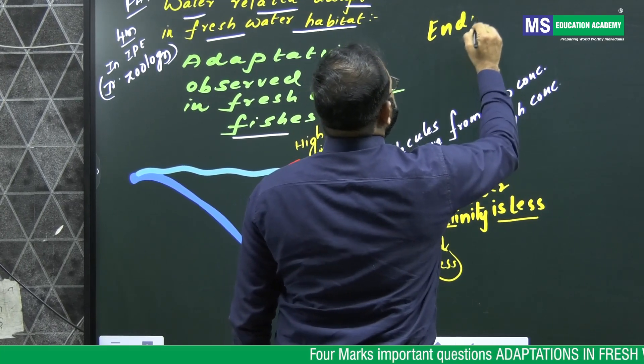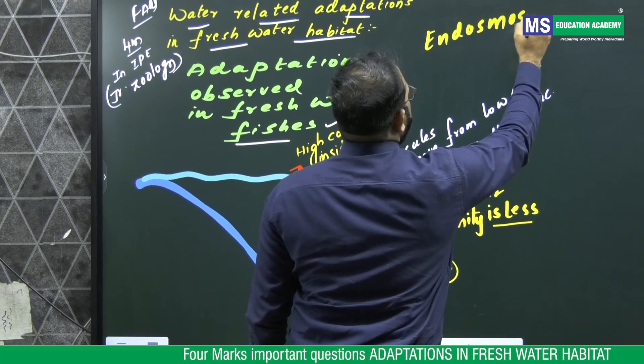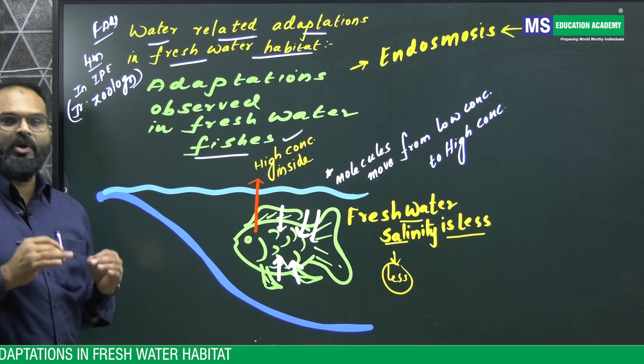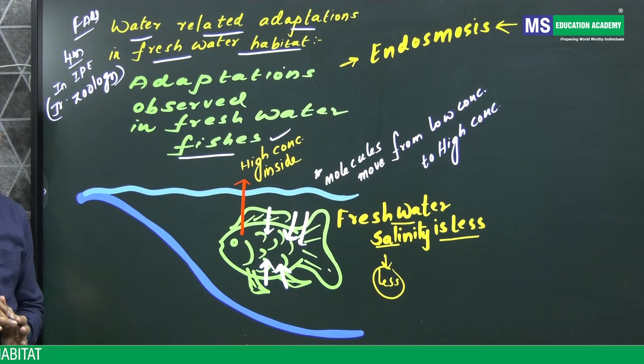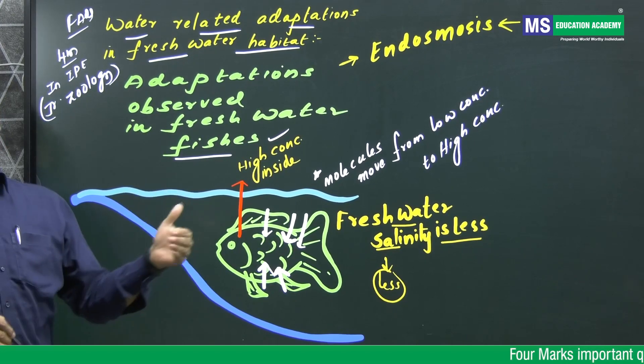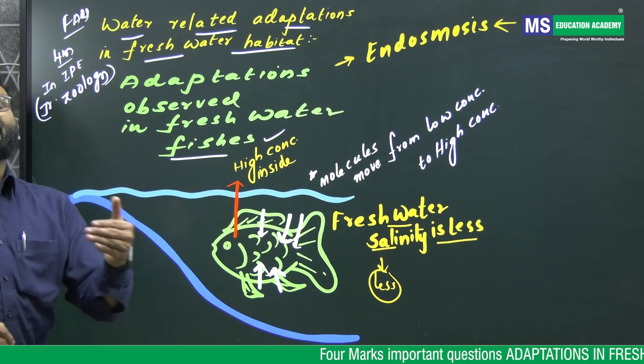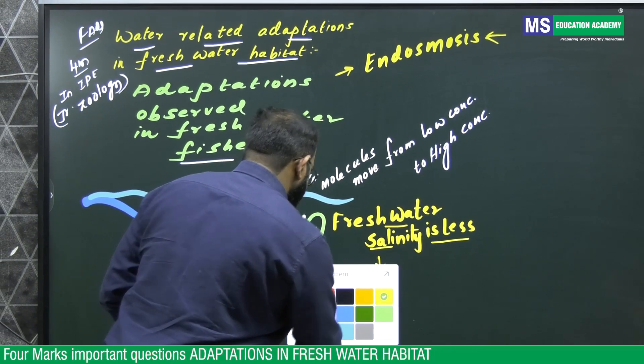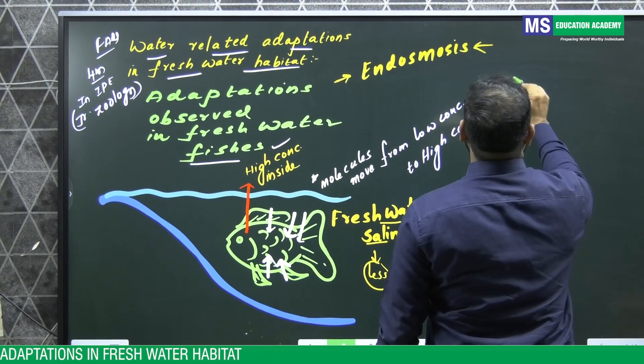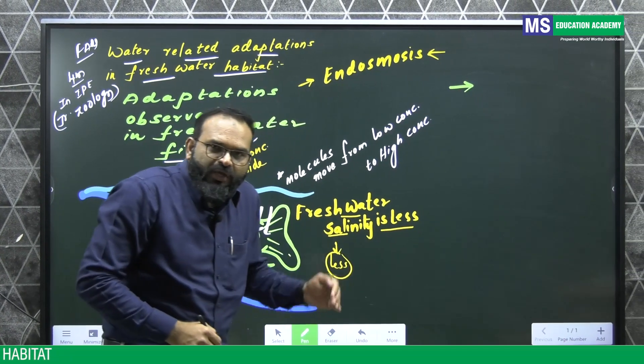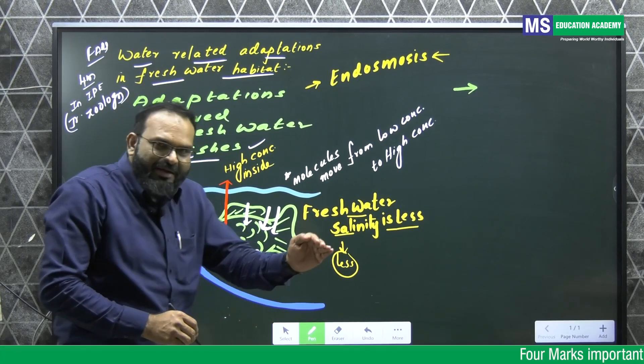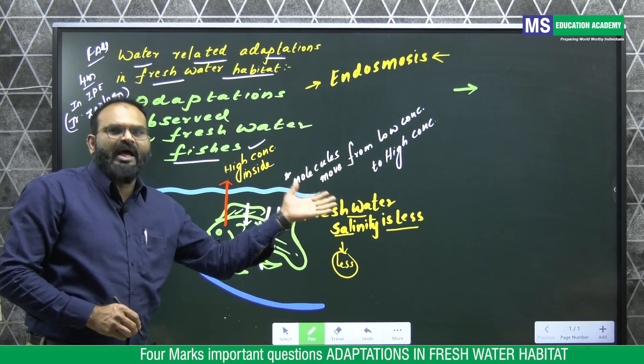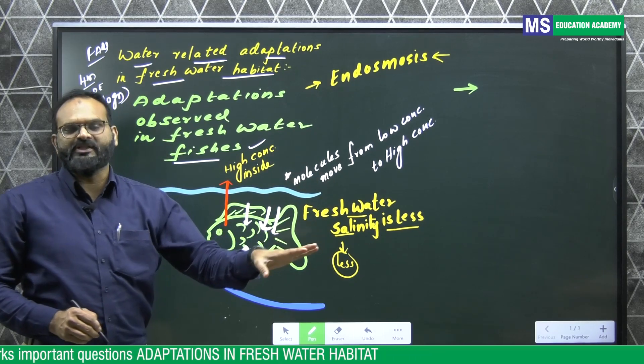Then the biggest problem what this fish faces is movement of water molecules inside the body and we use a word called endosmosis. To overcome this endosmosis problem, fish should develop certain adaptations. The first adaptation is it has to lower its body concentration and make the concentration equivalent to the water or habitat in which it is present.